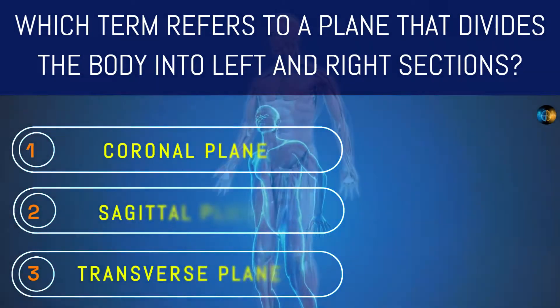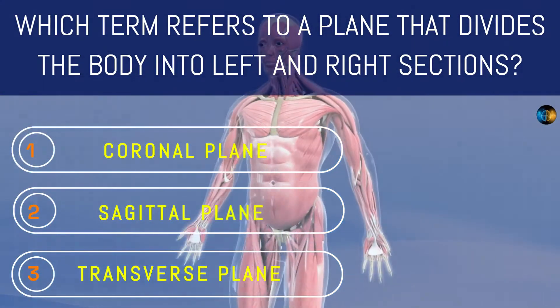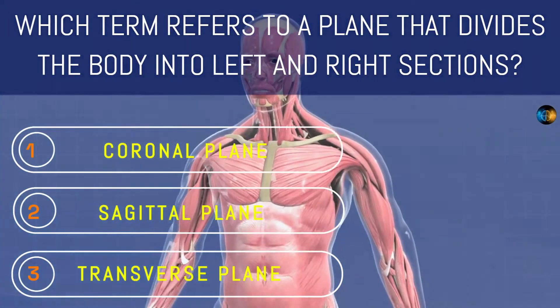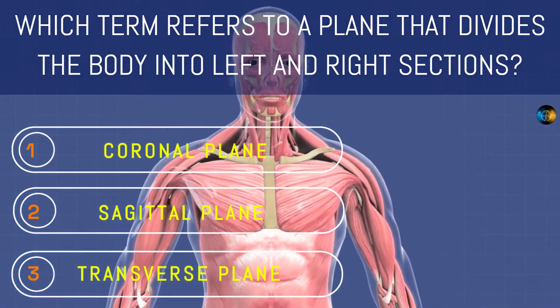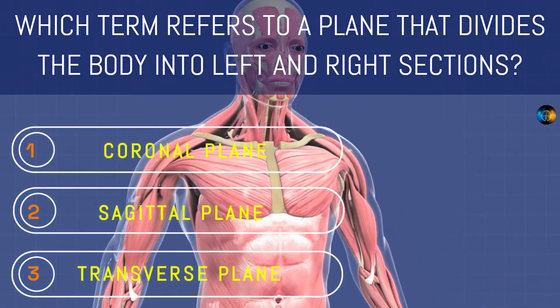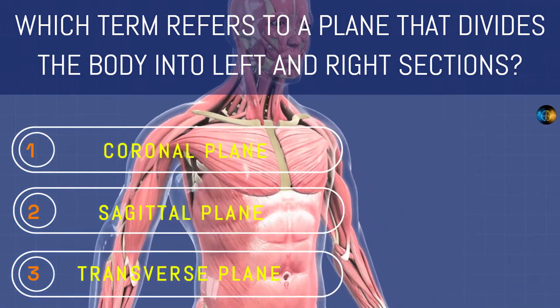Which term refers to a plane that divides the body into left and right sections? Coronal, sagittal, or transverse plane?